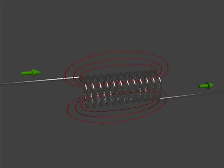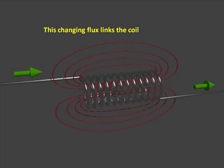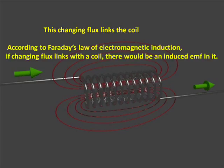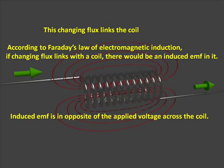As the flux is around the coil, this changing flux obviously links the coil. Now according to Faraday's law of electromagnetic induction, if changing flux links with a coil, there would be an induced EMF in it. Again as per Lenz's law this induced EMF opposes every cause of producing it.